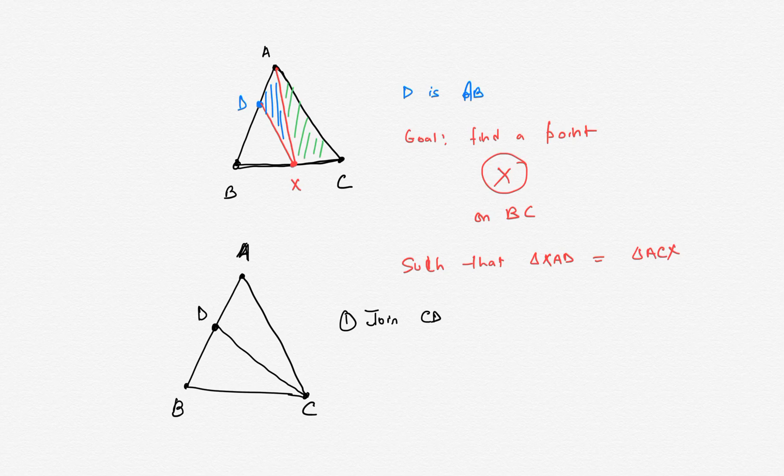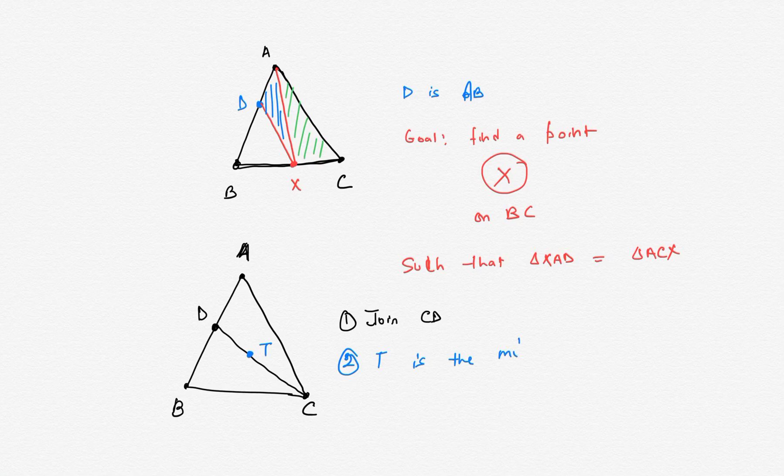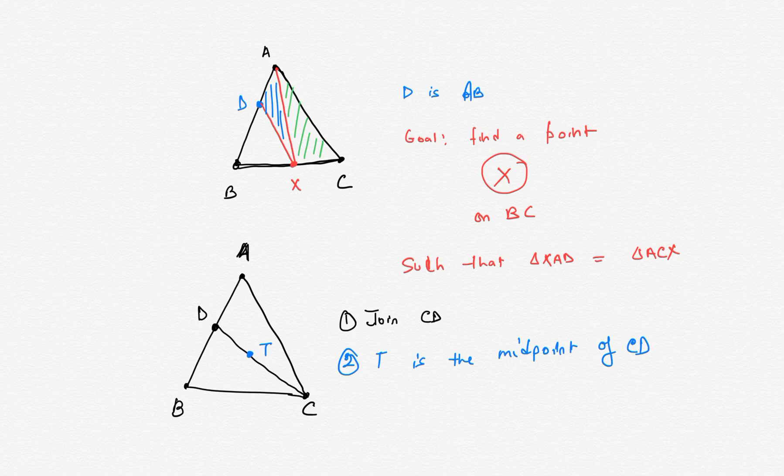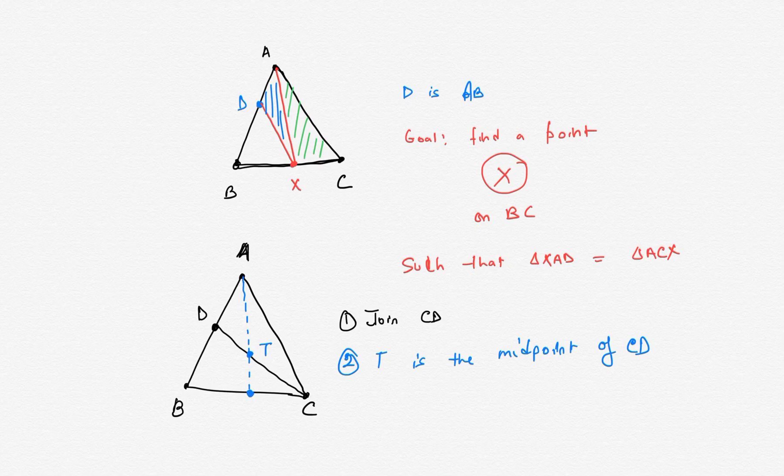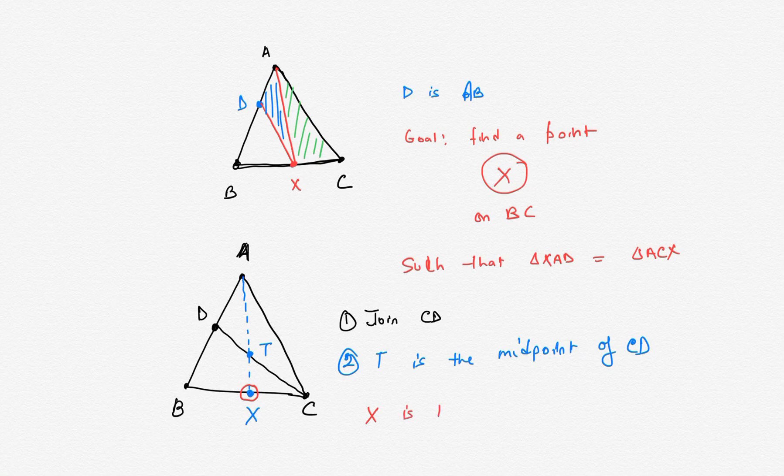Then pick the midpoint of CD. Let's call it T. Suppose T is the midpoint of CD. Join AT and produce it to meet BC at X. Now we claim that X is our desired point.